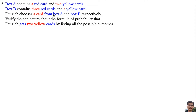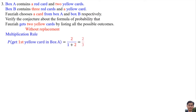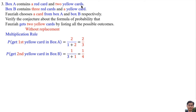The question does not say Fawzia returns the card to the box, so this is without replacement. Using the Multiplication Rule: the probability of getting the first yellow card from Box A is 2 per 3 (since Box A has 1 red and 2 yellow cards, total 3 cards). The probability of getting a yellow card from Box B is 1 per 4 (since Box B has 3 red and 1 yellow card, total 4 cards). So the probability of getting two yellow cards is 2 per 3 multiplied by 1 per 4, which equals 1 per 6.